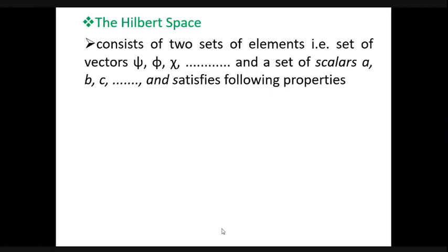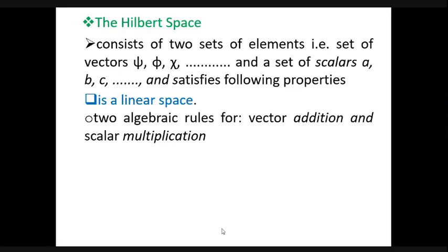Here we will discuss the Hilbert space. In quantum mechanics, it is postulated that all possible states of a system form a vector space — that is, they can be manipulated with certain operations which satisfy certain rules. The Hilbert space consists of a set of elements or vectors and a set of scalars, and it is a linear space, satisfying all properties of a linear vector space. In a linear vector space, the elements obey two algebraic rules: vector addition and scalar multiplication.